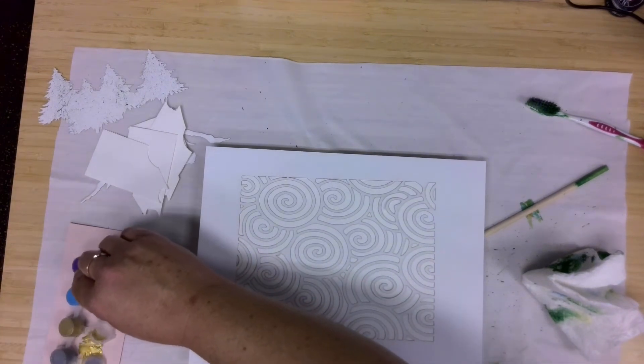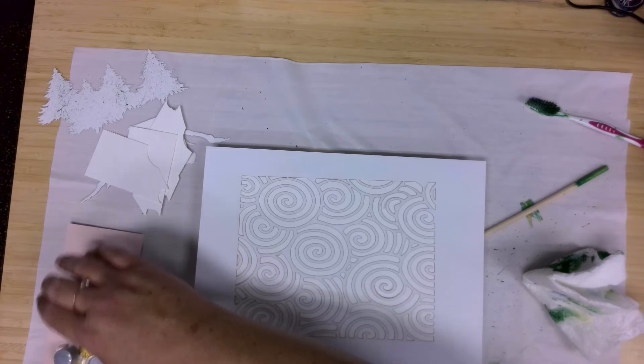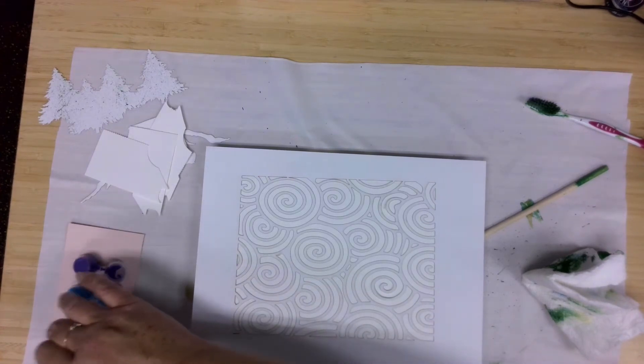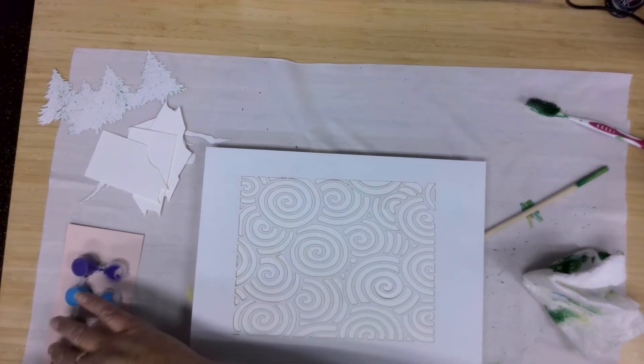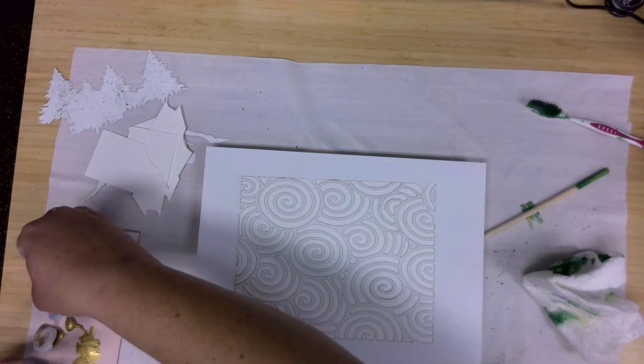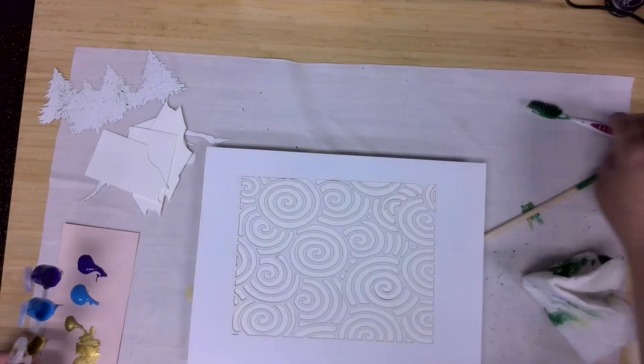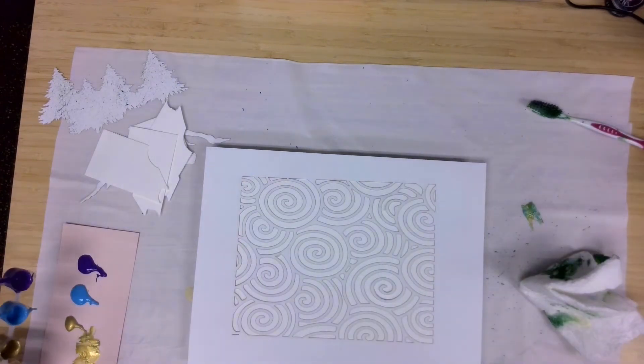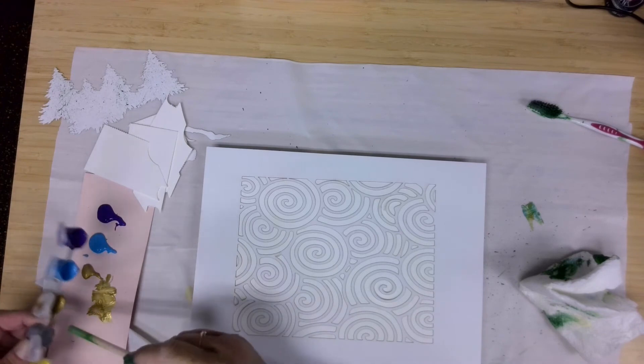So I'm really just going to pour out some paint onto my paper here. There we are. The gray didn't want to come out. That's all right.